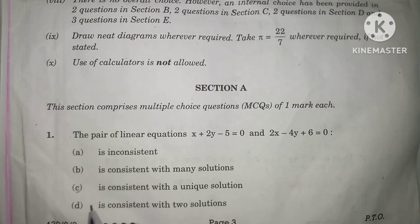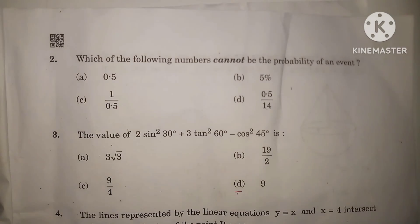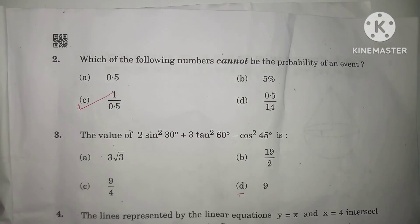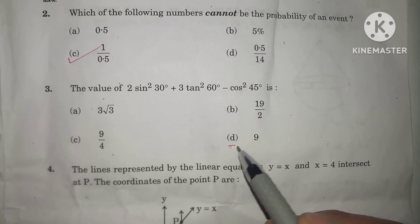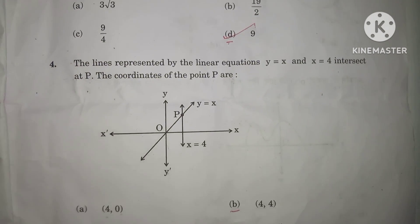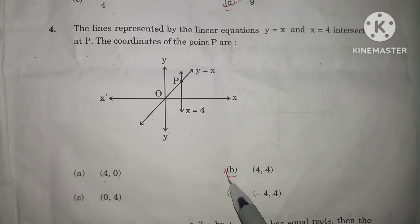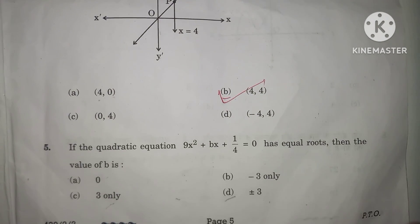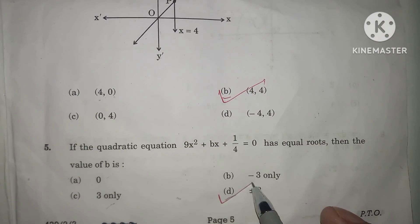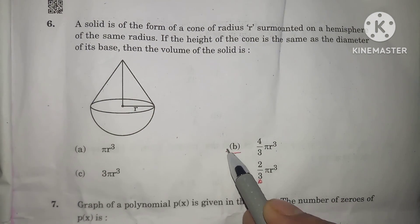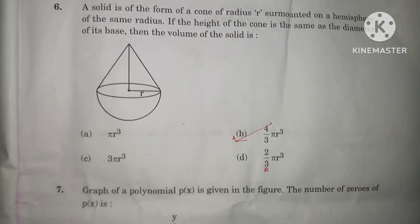In question number 1, C option is the correct option. In question number 2, C option is the correct option. In question number 3, D option is the correct option. In question number 4, B option is the correct option. In question number 5, D option is the correct option. In question number 6, B option is the correct option.